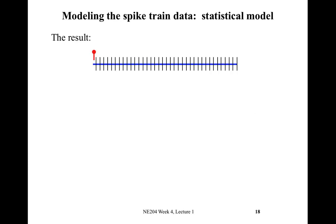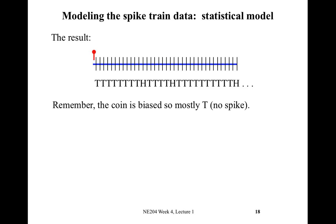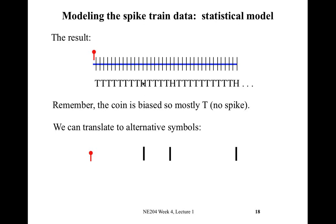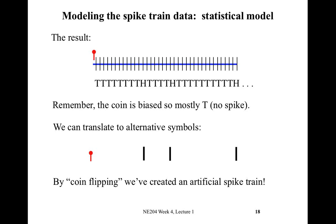The result of this coin-flipping procedure produces a sequence with mostly Ts and occasional Hs — since the coin is biased, we expect 99% of the time to observe a T (no spike). We can translate this sequence into an alternative representation by marking every H with a tick mark, thereby creating an artificial spike train. By flipping a biased coin in many, many sub-intervals, we create a fake spike train.